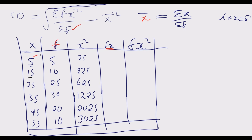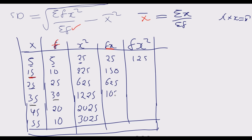Now calculate fx by multiplying each midpoint by its frequency: 5 × 5 = 25, 15 × 10 = 150, 25 × 25 = 625, 35 × 30 = 1050, 45 × 20 = 900, 55 × 10 = 550.